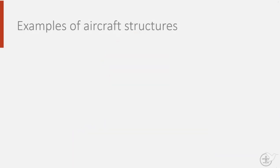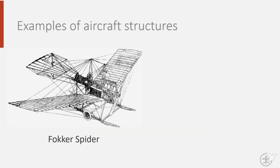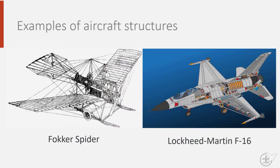This was, of course, not always the case. If we look at this drawing of the first Dutch aircraft to fly, the Fokker Spin or Spider, you can see that sheltering pilots from the environment wasn't exactly a priority in the early days of flying. But things have come a long way since then. If you look at the F-16 Fighting Falcon, we can see that the pilot is fully encased.